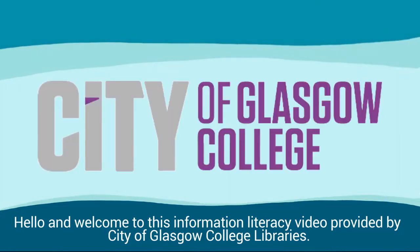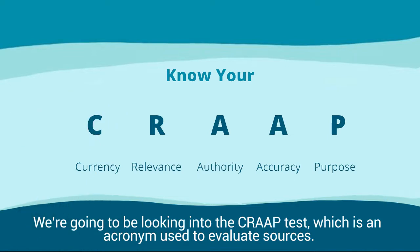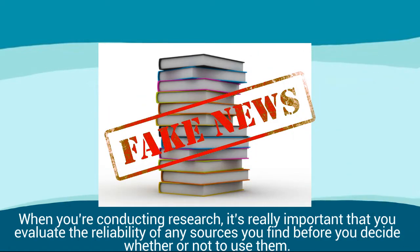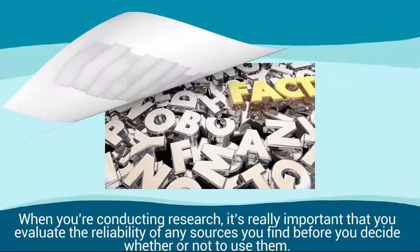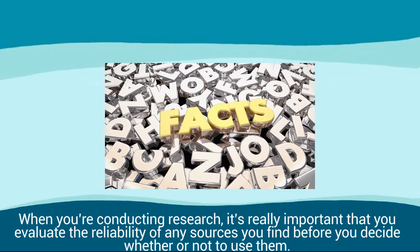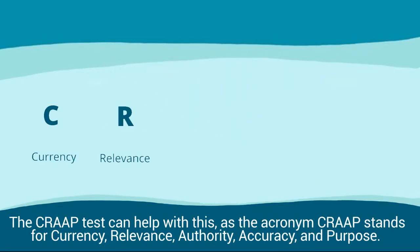Hello and welcome to this information literacy video provided by City of Glasgow College Libraries. We're going to be looking into the CRAP test, which is an acronym used to evaluate sources. When you're conducting research, it's really important that you evaluate the reliability of any sources you find before you decide whether or not to use them. The CRAP test can help with this, as the acronym CRAP stands for Currency, Relevance, Authority, Accuracy, and Purpose.